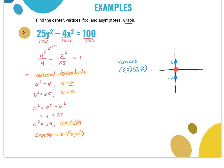My foci are located at (0, √29) and (0, −√29). Now I need the asymptotes. For a vertical hyperbola, the slope is ±(a/b), so ±(2/5). My asymptote equation is y = ±(2/5)x.